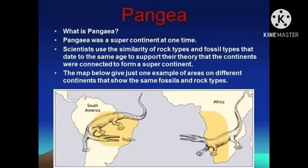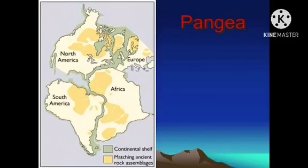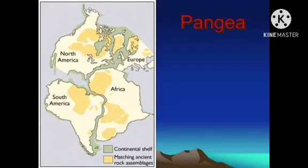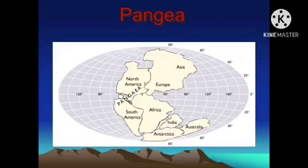Pangea was a supercontinent at one time. Scientists used the similarity of rock types and fossil types that date to the same age to support their theory that the continents were connected. Pangea is a Greek word which means 'all earth.' The illustration shows how Pangea evolved into how the continents look today. Pangea started to break into two smaller supercontinents called Laurasia and Gondwana Land during the Jurassic period. These smaller supercontinents then broke into the continents, which separated and drifted apart.